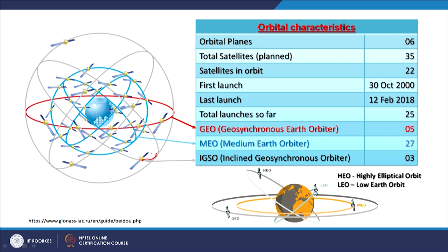Three types of orbits are being used: GEO, MEO, and IGSO. Two additional orbits — highly elliptical orbit (HEO) and low earth orbit (LEO) — are mentioned for completeness since medium earth orbit is the primary one being used for navigation satellites. This figure showing the different orbital types is quite important.